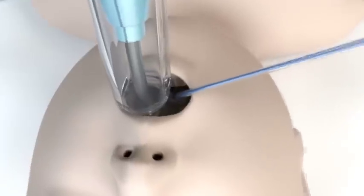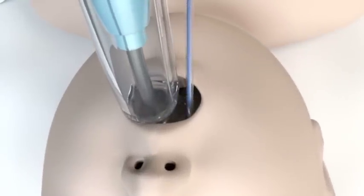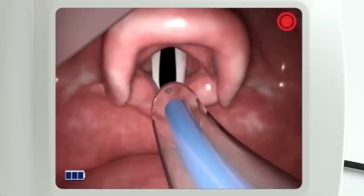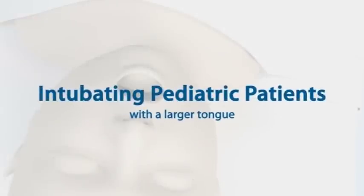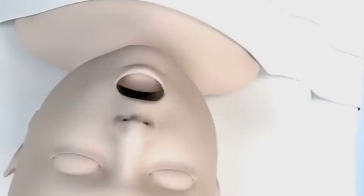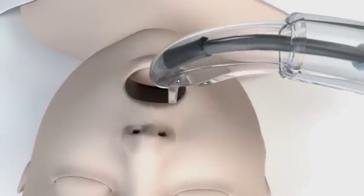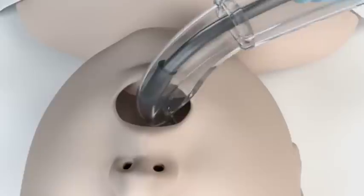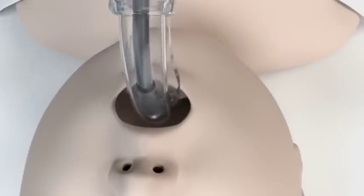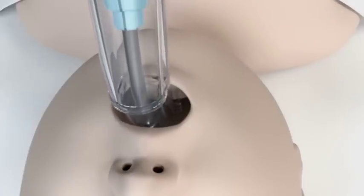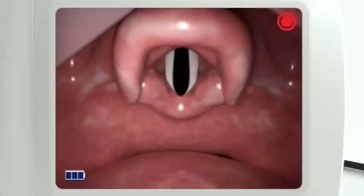Once proper ETT placement is achieved, turn the endotracheal tube to the 12 o'clock position, adjacent to the stat. Then look at the screen to intubate. In the pediatric patient with a larger tongue, where you are having difficulty placing the GlideScope Video Laryngoscope midline, you may want to turn the GlideScope and enter the mouth at a perpendicular angle, without sweeping the tongue. Once you get around the base of the tongue, turn the GlideScope back to its original 12 o'clock position, then look at the screen to obtain the best glottic view.